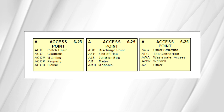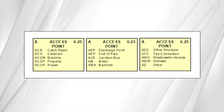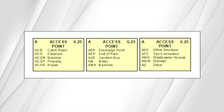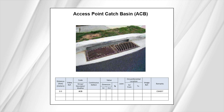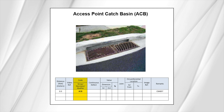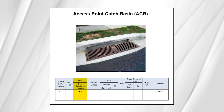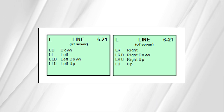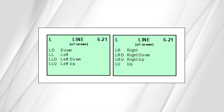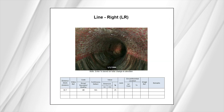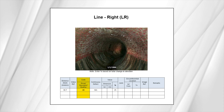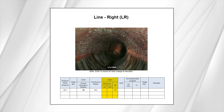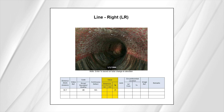The next code group of the construction features family is access points, represented by the letter A. All inspections must begin and end, unless abandoned, at a defined access point. In this case, the access point is a catch basin, so we would code it as ACB, which stands for Access Point Catch Basin. Remarks are used to provide additional information. Moving on to line codes, or the letter L — these codes describe a visible change in the direction of the pipe. In this brick sewer, the line changes direction to the right, so it would be coded as LR, which stands for Line Right, with a value of 25% based on the degree change. It is also continuous because it extends more than 3 feet.